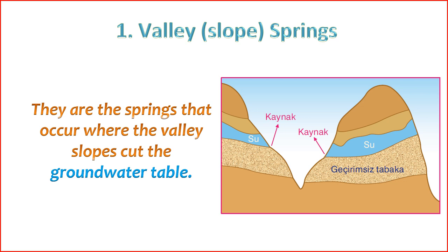2. Geological Conditions — these springs often occur in areas with layered geological formations where an impermeable layer, such as clay or rock, restricts the downward movement of water, causing it to emerge along the slope. 3. Topographical Influence — the topography of the land plays a crucial role. The slope allows water to flow downhill, and when it encounters the impermeable layer, it is forced to the surface as a spring.